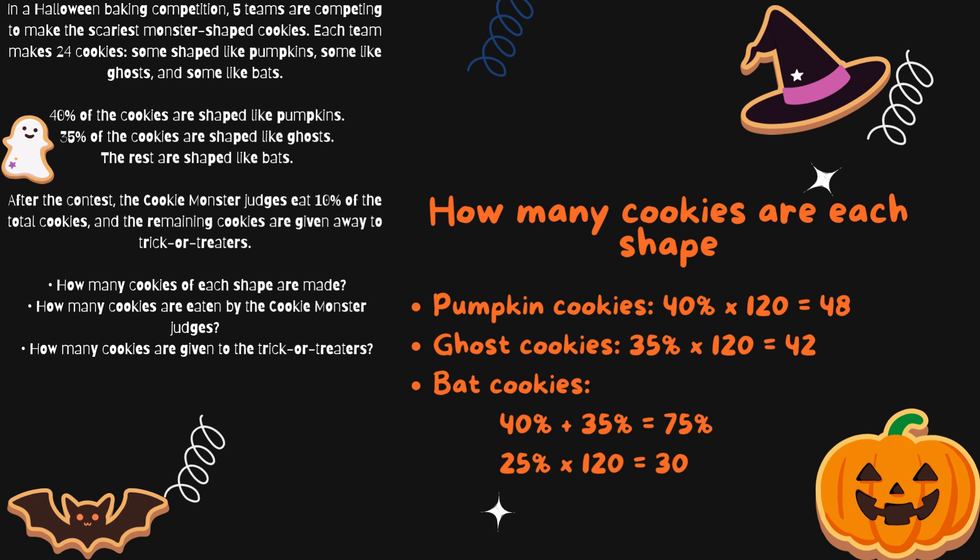Ghost cookies: 35% of the cookies are ghosts. So 35% of 120 means there are 42 ghost cookies.